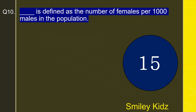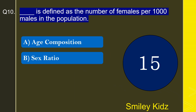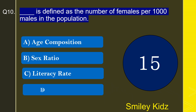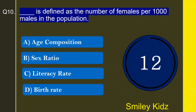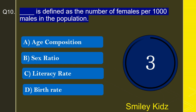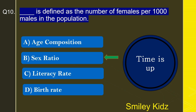Moving to question number 10: What is defined as the number of females per thousand males in the population? Options are age composition, sex ratio, literacy rate, or birth rate. The correct answer is sex ratio. Sex ratio is defined as the number of females per thousand males in the population.